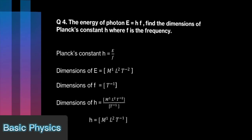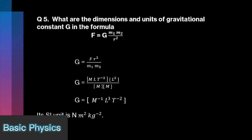What are the dimensions and units of gravitational constant G in the formula F is equal to G M1 M2 by R square? Rearrange the formula for G: G is equal to F R square divided by M1 M2.